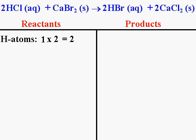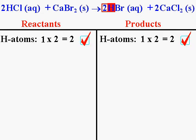Let's look at the product side of the equation and see how many hydrogen atoms are there. The molecule that contains hydrogen on the product side is HBr. There's no subscript after the H, so there's only one hydrogen atom in an HBr molecule. However, there's a two next to the molecule, meaning there are two HBr molecules. Multiplying one hydrogen atom by two molecules gives two hydrogen atoms on the product side. That's good — hydrogen atoms check out; they are balanced.